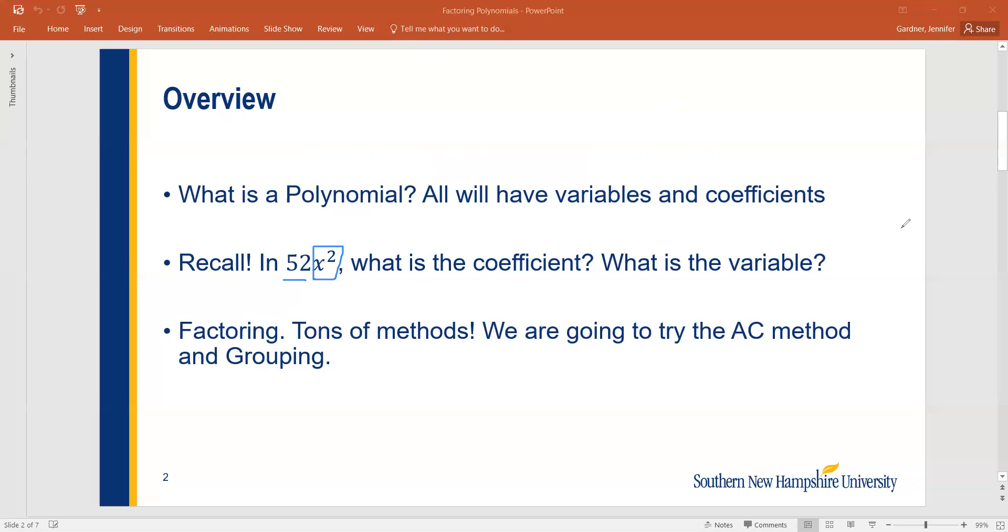Now when you have a polynomial, you can graph it to gather some information. You can look at it and factor it out in order to figure out what the x values are going to be. There's a ton of different things you can do with polynomials. Today we're going to talk about factoring polynomials. There's a bunch of different methods, but we're going to try out the AC method and grouping.